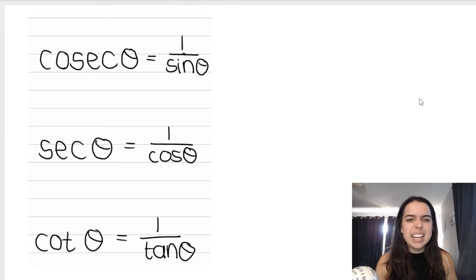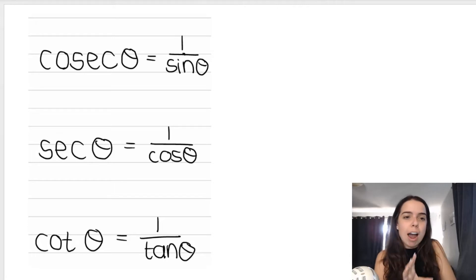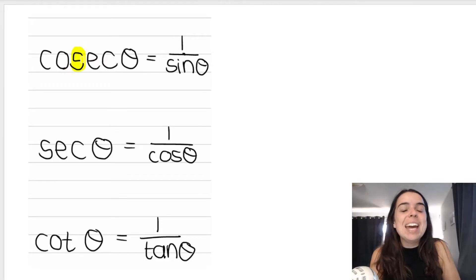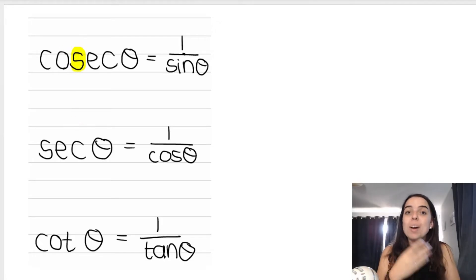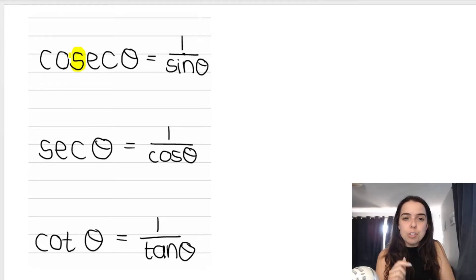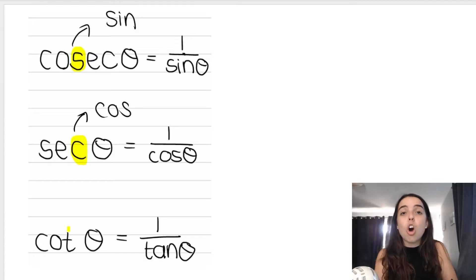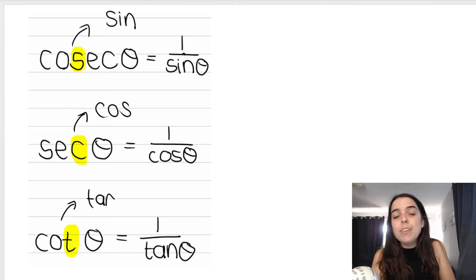A lot of students get confused because sec sounds like it should be the reciprocal of sin, but it's not. How I remember it - and an amazing math mentor of mine actually taught me this - it's the third letter of the reciprocal that corresponds to what it is the reciprocal of. So cosec: the third letter S, cosec is the reciprocal of sin. Sec: the third letter C, it's the reciprocal of cos. Cot: the third letter T, it's the reciprocal of tan. So hopefully that helps you.